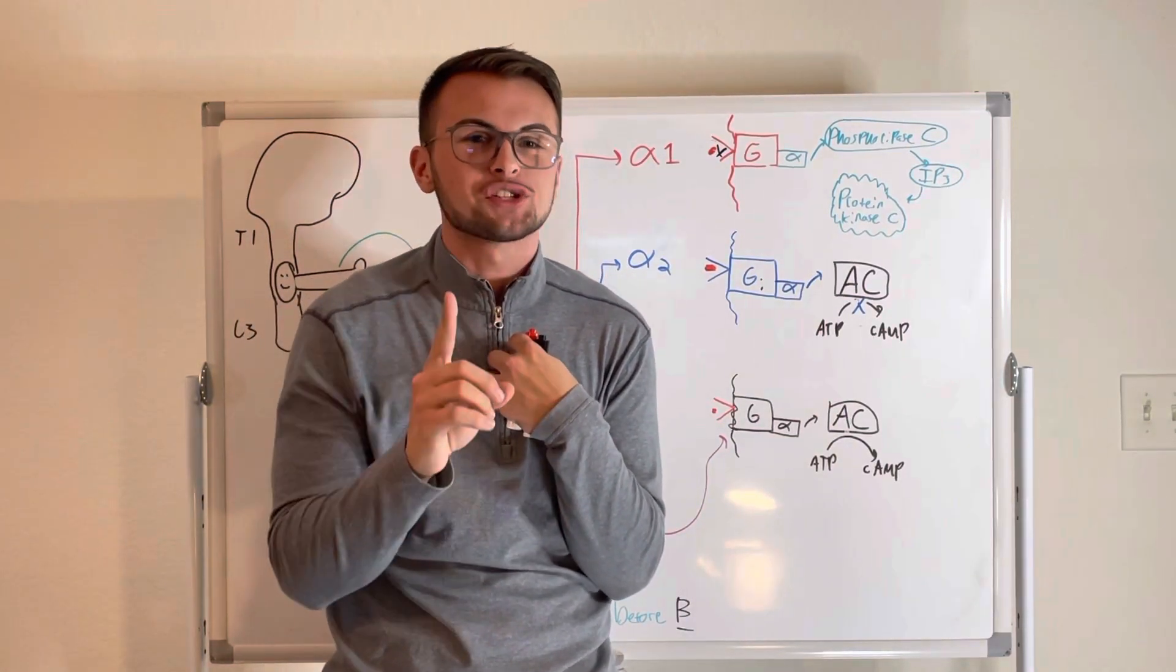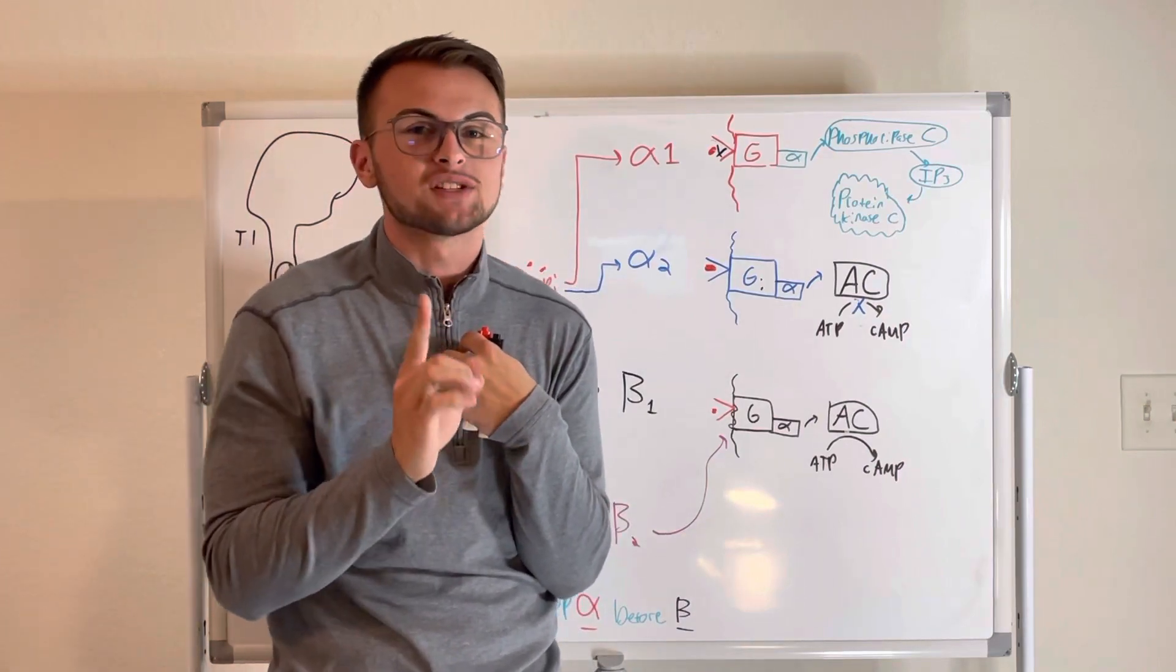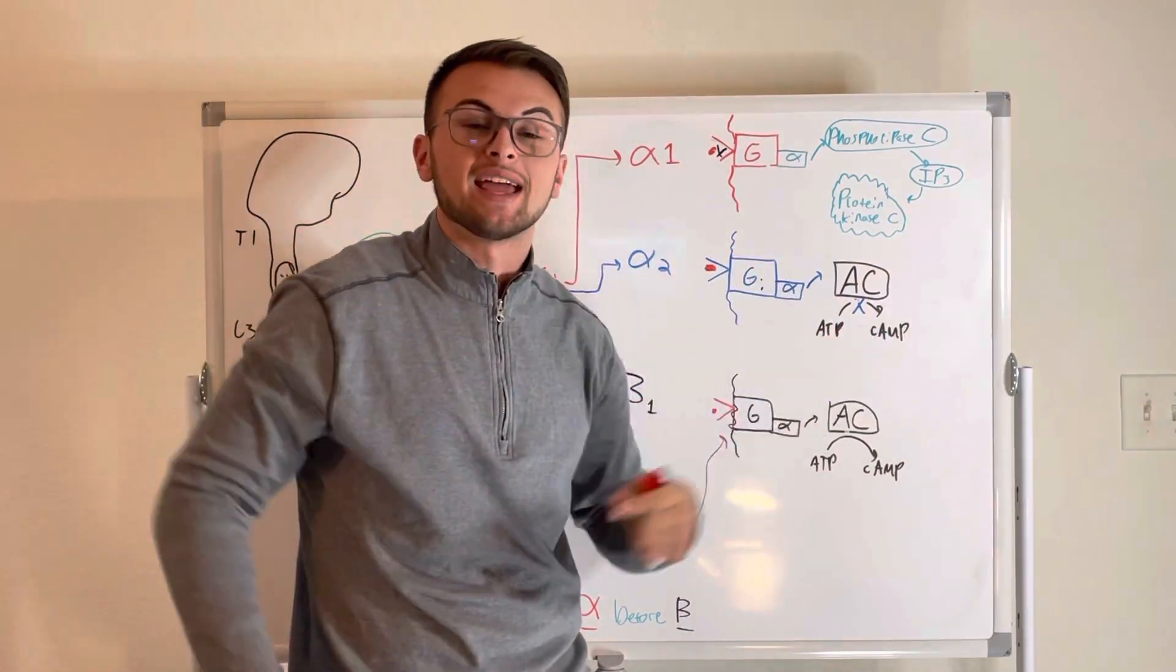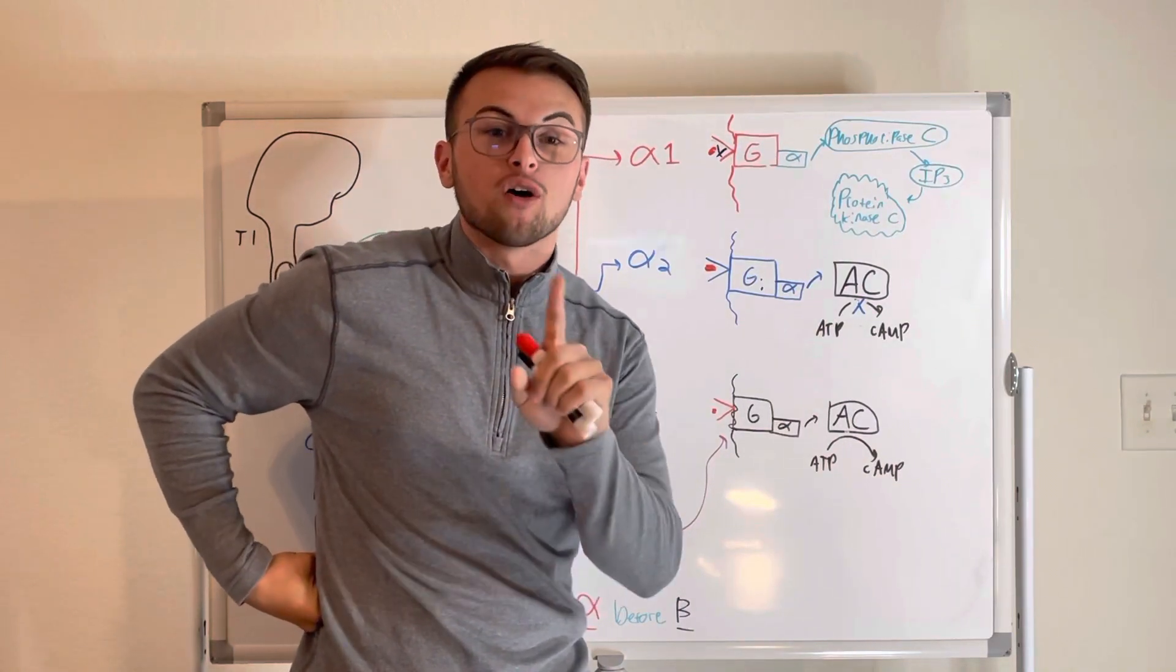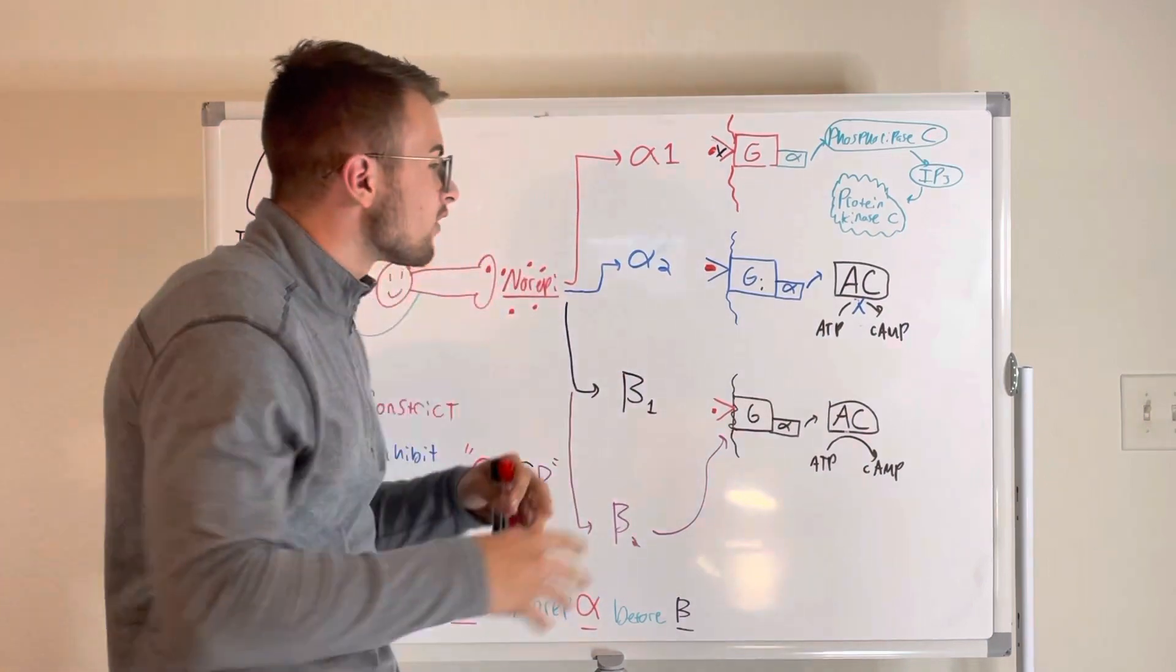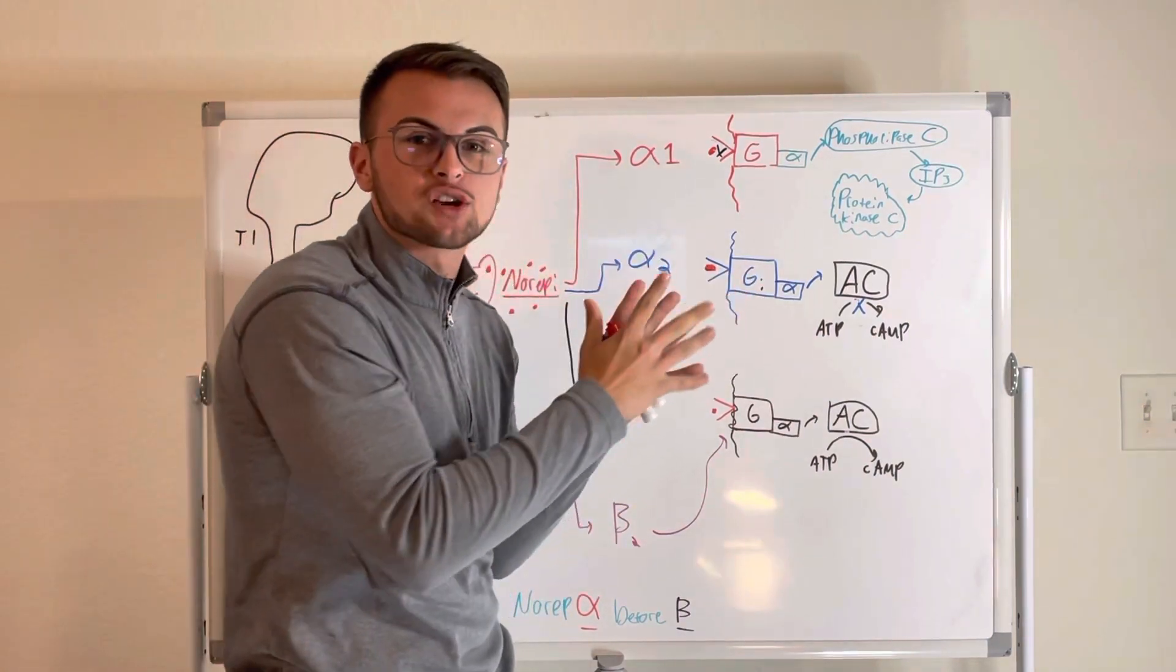So, an interesting fact is that we don't have these conservatory alpha-2 receptors in our adrenal medulla. So we can actually run out of circulating norepinephrine. So, enough about that. How do these receptors actually work?